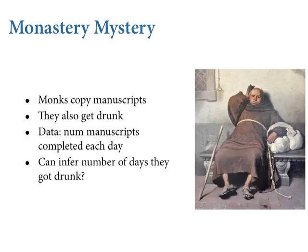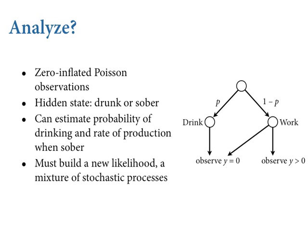So: very large number of trials — monks working on manuscripts — and a very small probability of completion on any given day. Binomial shrinks to Poisson. The problem is there's a heterogeneity in the process because they're not working every day. Some days the monastery kind of shuts down and drinks. On those days there are zeros, and they don't produce any manuscripts. But even on days when they work, they sometimes produce zeros. This is what we call zero-inflated data — more than one process produces zeros.